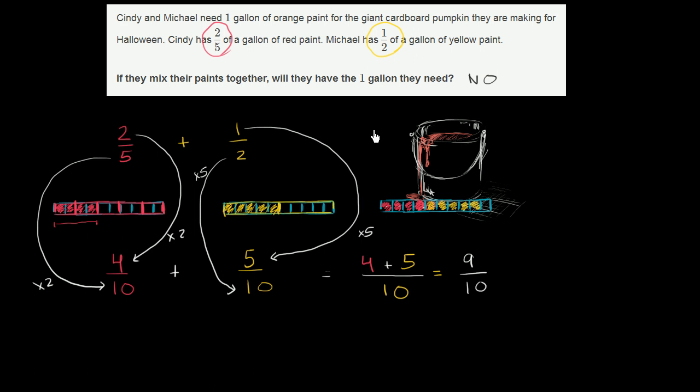Now another way you could have thought about this, you could have said, hey, look, two-fifths is less than a half. And you could even visualize that right over here. So if something less than a half plus a half, I'm not going to get a whole. So either way, you could think about it. But this way, at least we can think it through with actually adding the fractions.